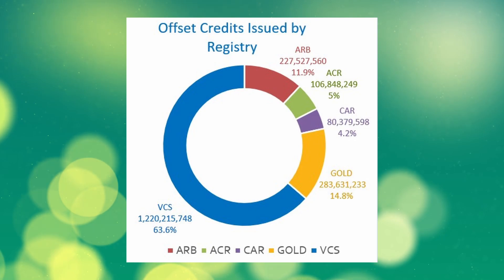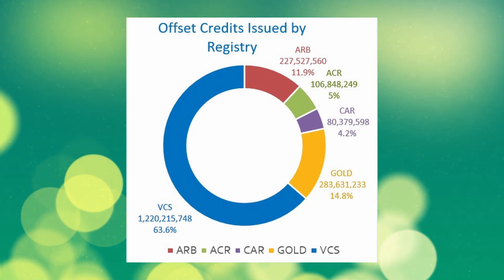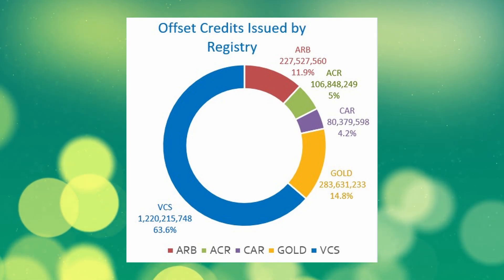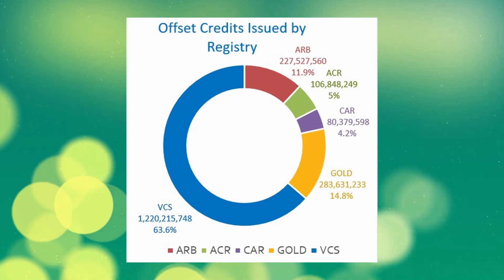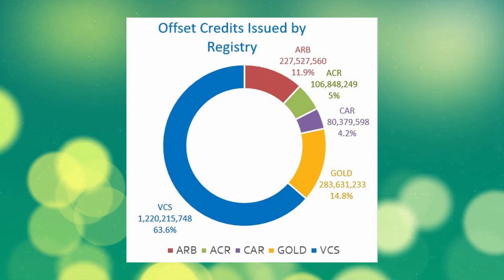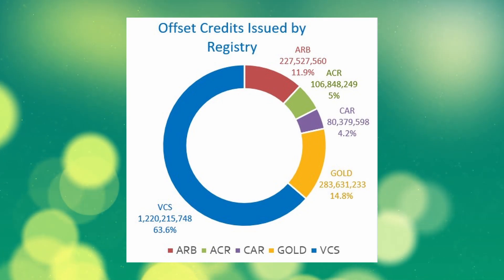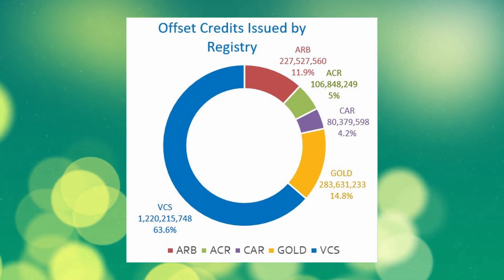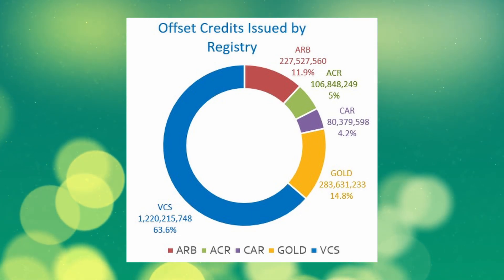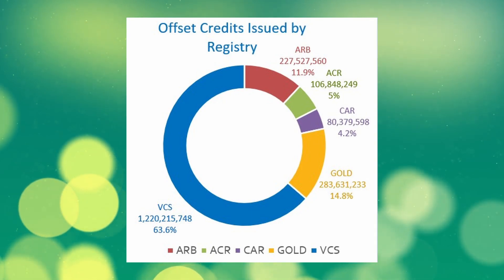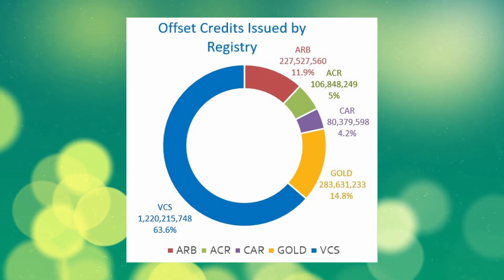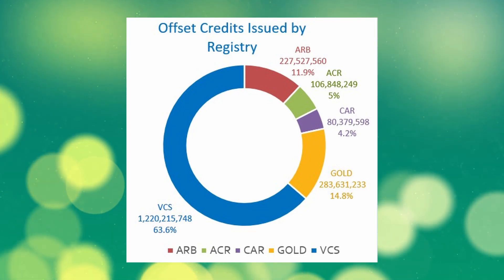As of November 2023, Verra was around 64% of the market, Gold Standard was around 15%, American Carbon Registry is 5%, and Climate Action Reserve came in at 4%. Those are the four largest registries in the voluntary carbon markets. The remaining 12% of the market is registered under the California Air Resources Board, a regulatory authority in the California Cap and Trade Scheme, which allows a certain percentage of credits to offset emissions instead of issued allowances — so those are carbon projects, but part of the compliance markets, not the voluntary markets.